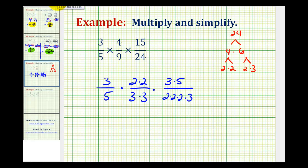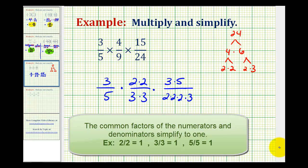Now we're looking for common factors between any numerator and any denominator. Notice how there's a common factor of two here and here, as well as here and here. And there's a common factor of three here and here, as well as here and here. And there's even a common factor of five here and here. Notice how it doesn't matter which numerator and denominator we use, as long as one factor is on the top and one factor is on the bottom.